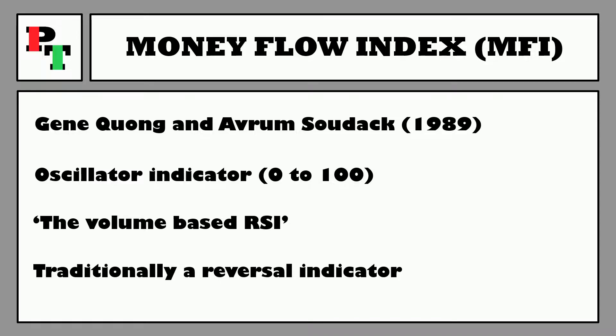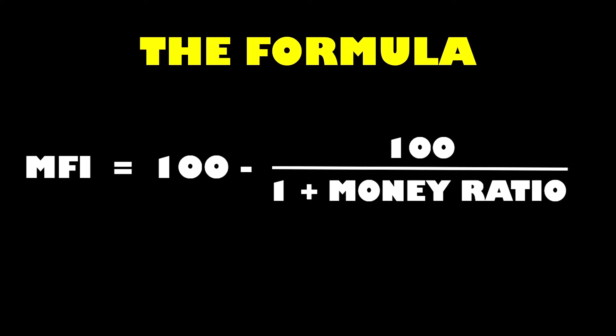Let's get to the formula of the MFI and see how it tries to find the reversal of those trends. The MFI reading is calculated by dividing 100 by 1 plus the money ratio, then subtracting that figure from 100, which puts it within the range-bound values. But what is that money ratio part?